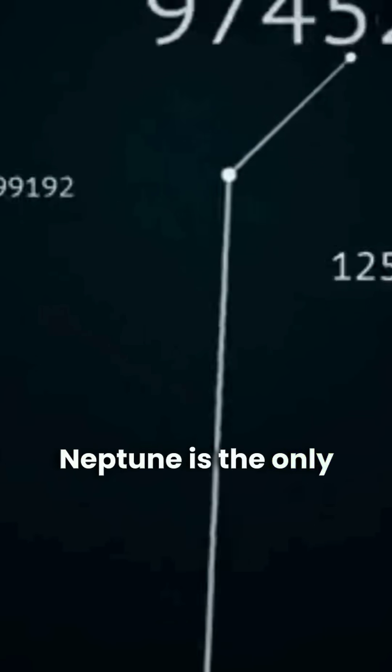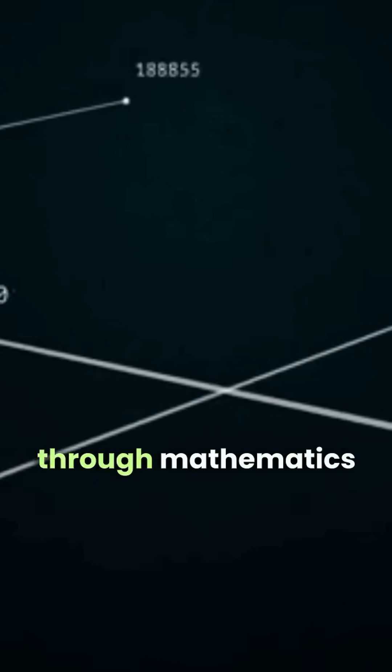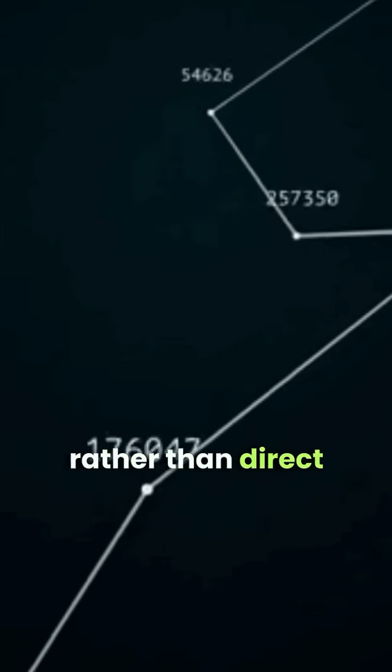Neptune is the only planet in our solar system discovered through mathematics rather than direct observation.